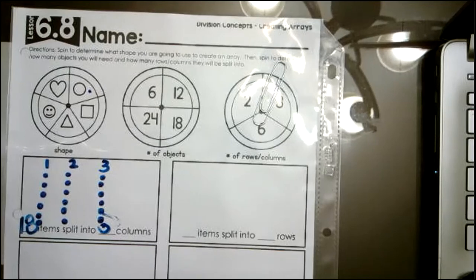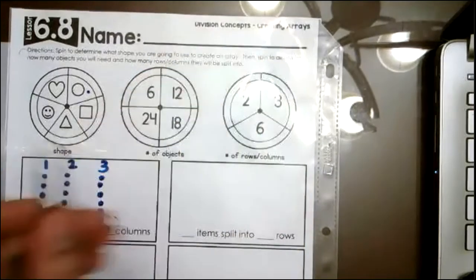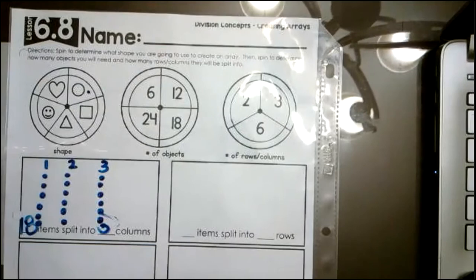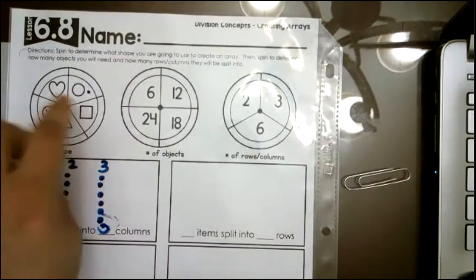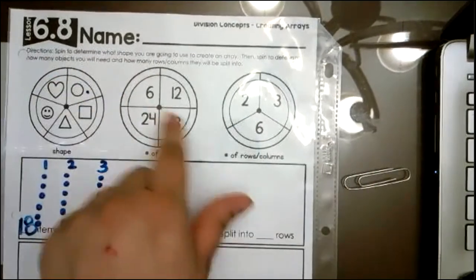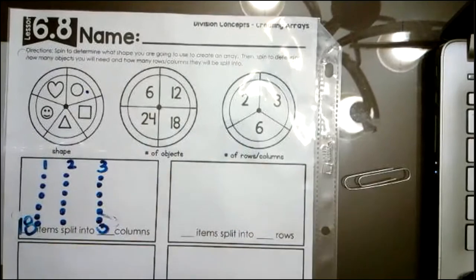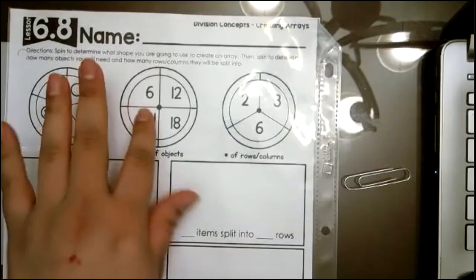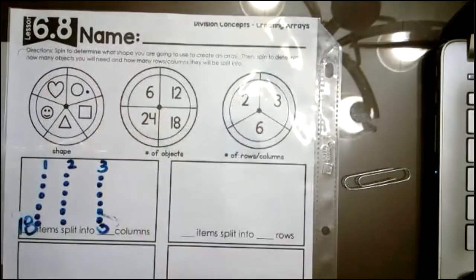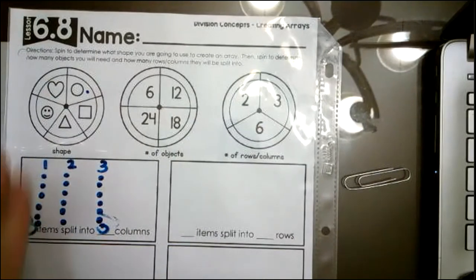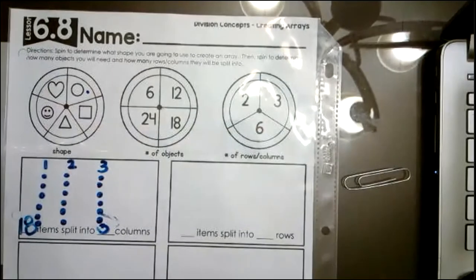So I am going to let you work independently. So remember, if you don't have a paper clip and you can't spin, I just want you to choose a different shape so that all of your arrays are different. And you can choose your own number, your own number of columns. But if you have a paper clip or a bobby pin, please use the spinners.